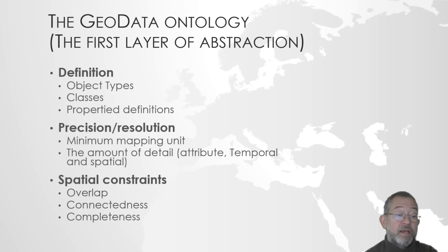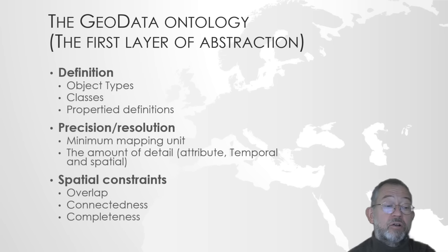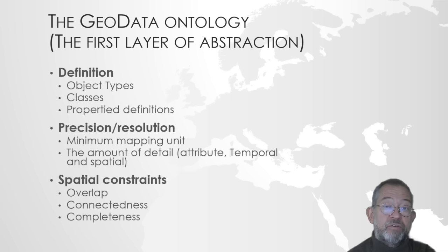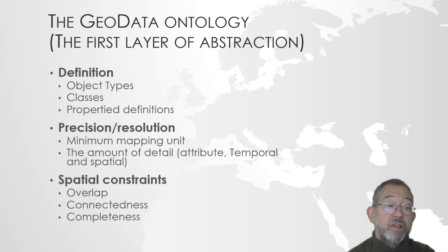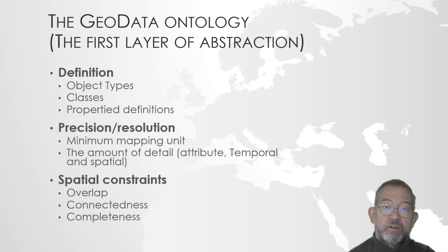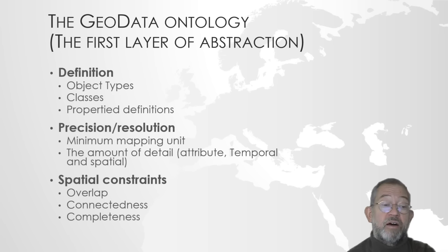We also have a constraint of connectivity — do roads have to meet up at road junctions? It makes it much easier to do modelling if they do. And finally, we have things like completeness — do we have data everywhere, or are there holes? These are the basic components of our ontology: definitions, object types, classes, phenomena, the precision at which we register, and also which spatial constraints we have on our data.